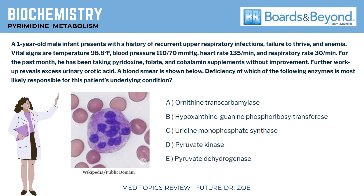Further workup reveals excess urinary orotic acid. A blood smear reveals hypersegmented neutrophils. Deficiency of which of the following enzymes is most likely responsible for this patient's underlying condition? A. Ornithine transcarbamylase. B. Hypoxanthine-guanine phosphoribosyltransferase. C. Uridine monophosphate synthase. D. Pyruvate kinase. E. Pyruvate dehydrogenase.